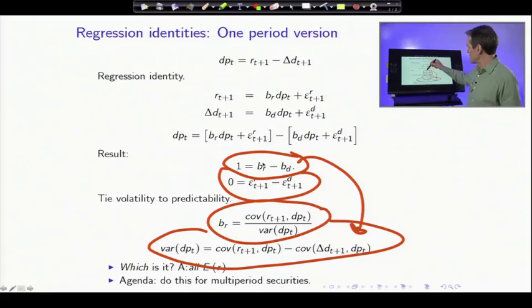And that equation is the same thing as saying the variance of dividend yields is its covariance with returns and the covariance with dividend growth. So we can read that equation, one equals b_R minus b_D. That's a decomposition of variance. It tells us how much of the variance of prices is coming from its covariance with returns, from its ability to forecast returns, from time varying expected returns, and how much is coming from time varying dividend growth.